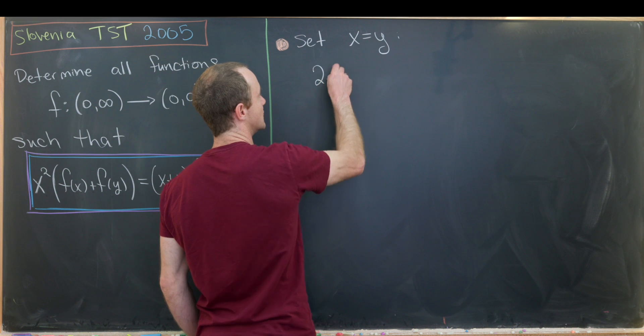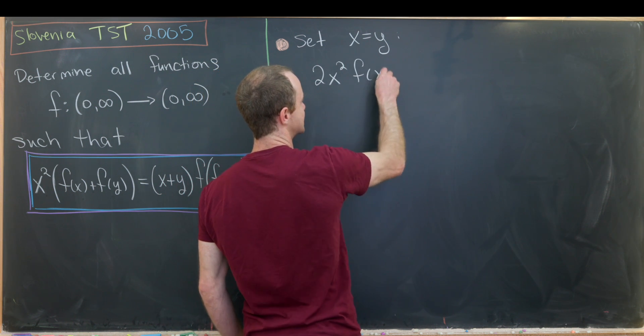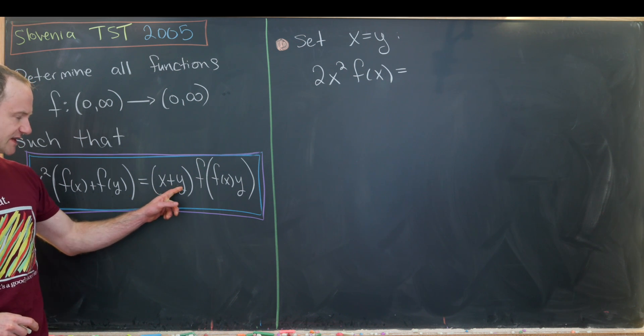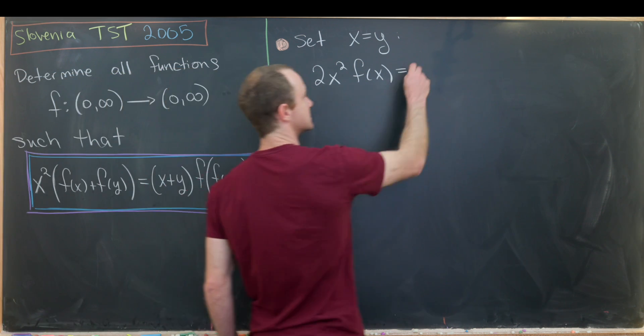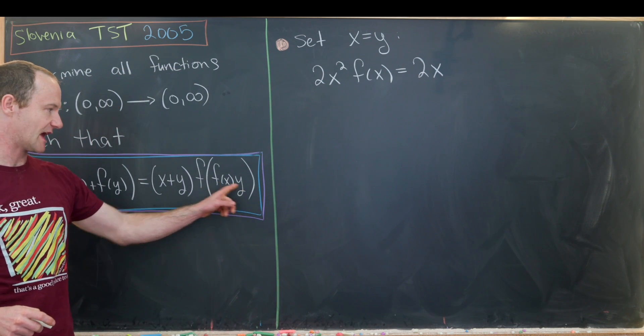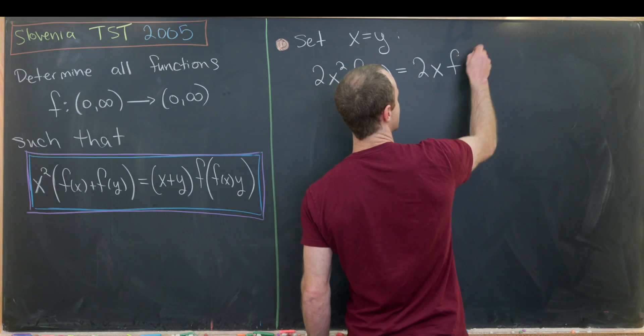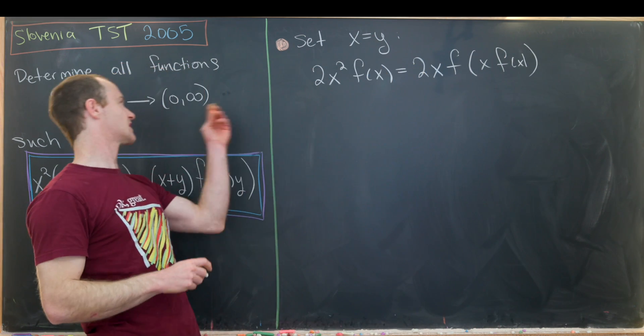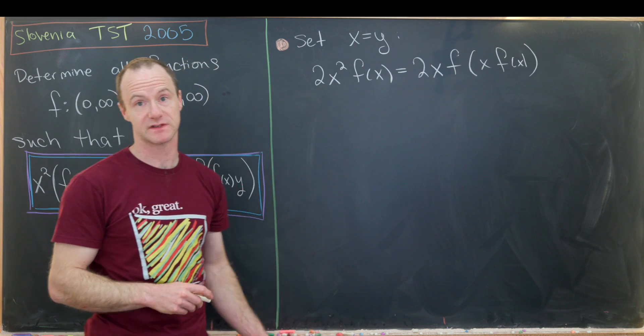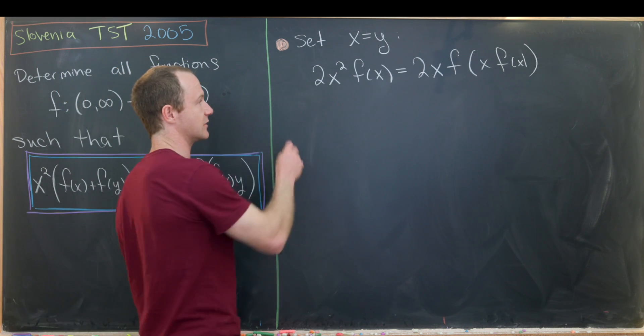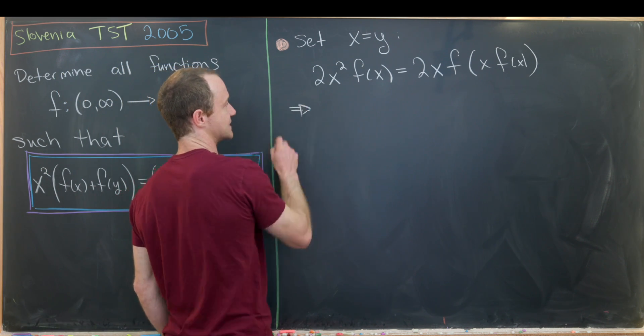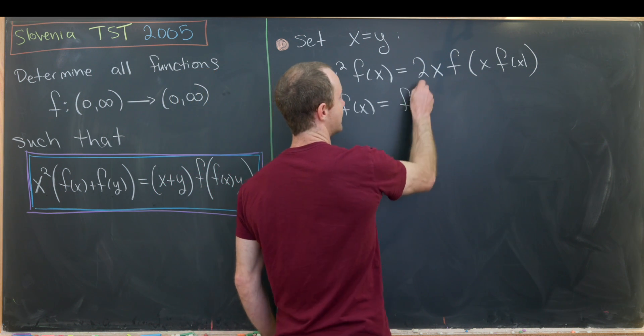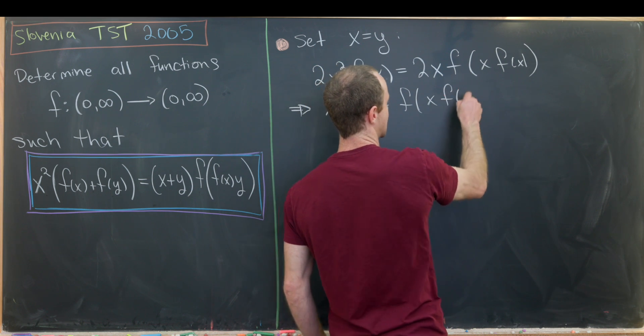So we'll have x²f(x) + x²f(x). So that'll be 2f(x). That means the left hand side is 2x²f(x). Then let's look at the right hand side. We'll have x + x, so that's 2x, and then we'll have f evaluated at x times f(x). Now since x comes from the positive real numbers, we can divide it from both sides because it's not zero. Two is also not equal to zero. So we can divide that from both sides. And that leaves us with xf(x) = f(xf(x)).